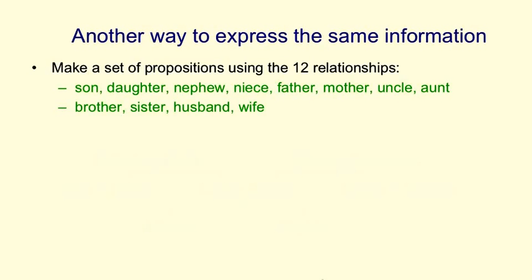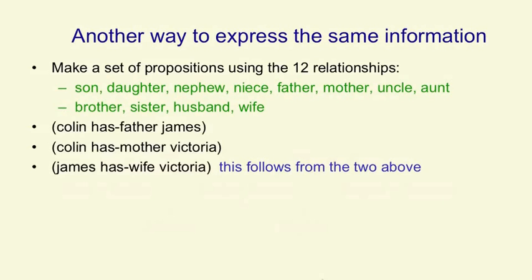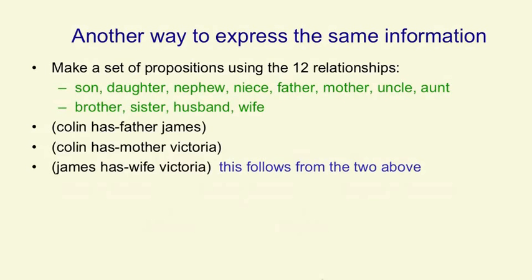We're going to use the relationships: son, daughter, nephew, niece, father, mother, uncle, aunt, brother, sister, husband, and wife. Using those relationships, we can write down a set of triples, such as Colin has father James, Colin has mother Victoria, and James has wife Victoria. In these simple families, the third proposition follows from the previous two. Similarly, the third proposition in the next set follows from the previous two.